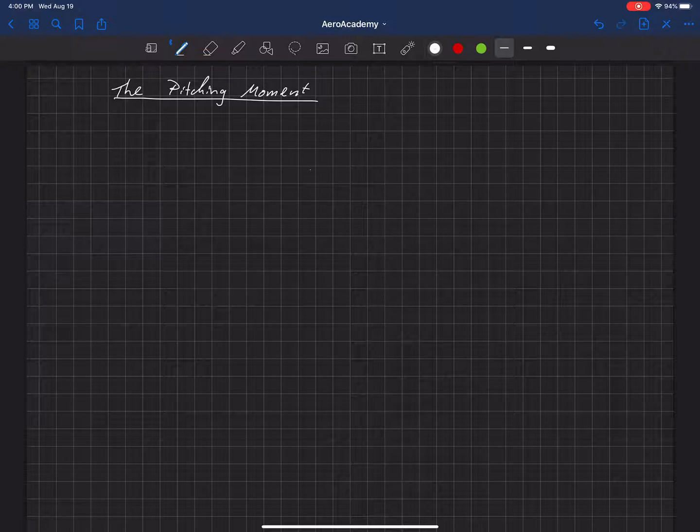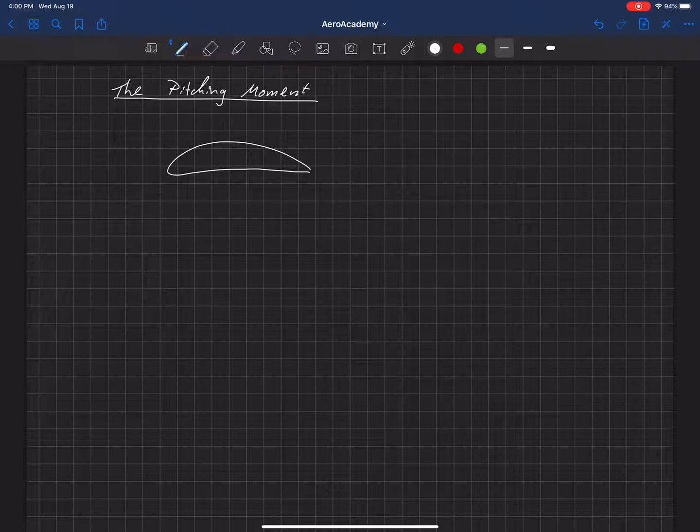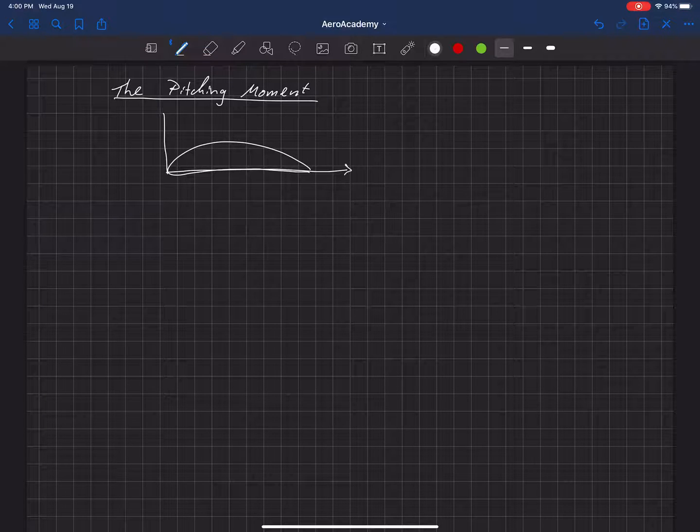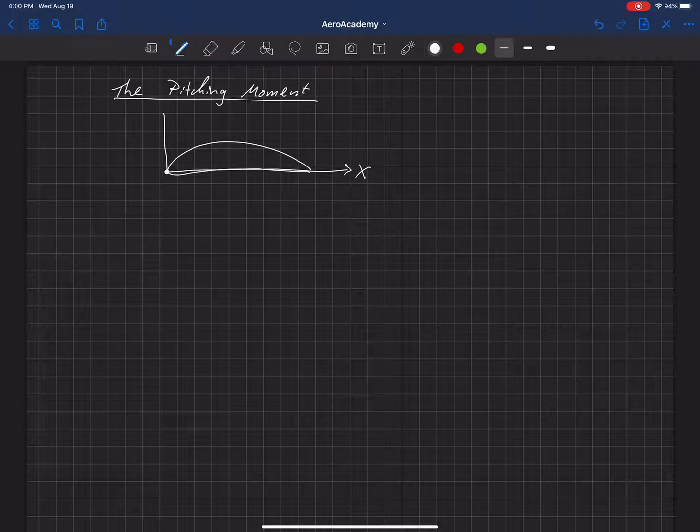Remember that the forces and moments on the airfoil are really the integral of the pressure and shear along the surface of that geometry. And so we can integrate those about any point on the airfoil. Now, remember, we have this coordinate system where we place the origin at the leading edge, and X is along the airfoil there, along the chord, and Y is normal to that.